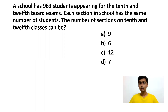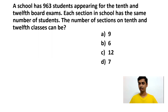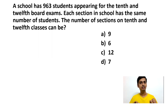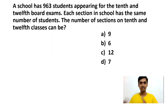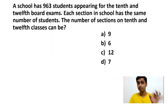You have the first question here. A school has 963 students appearing for 10th and 12th board exams. Each section in the school has the same number of students. The number of sections in 10th and 12th classes can be — what? In this school we have 963 students from 10th and 12th standard, and we need to find the total number of sections. The answer perfectly lies in factoring 963.